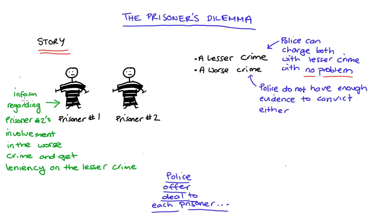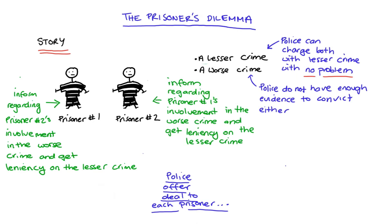The police will approach prisoner one and say: we're going to convict you on the lesser crime, but if you tell us about prisoner number two's involvement in the worst crime, we're going to be very lenient with your sentencing — perhaps we'll even let you go completely. They'll also go to prisoner number two and say something similar: we've got you for the lesser crime, but we'll be lenient — maybe even let you go with no jail time — if you tell us about prisoner number one's involvement in the worst crime. The hope from the police's perspective is that each prisoner implicates the other, allowing them to convict both for the worst crime.